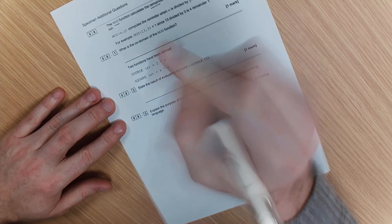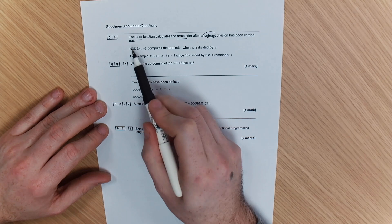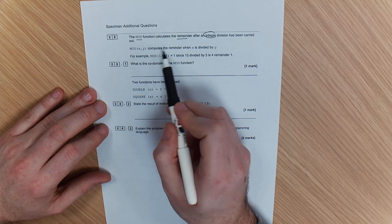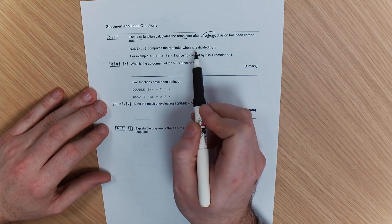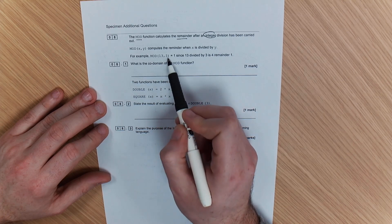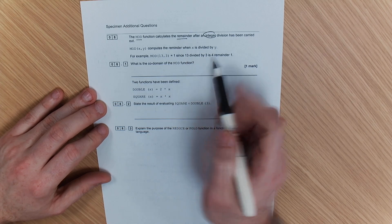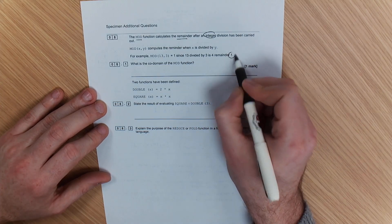That's important. Just make a note of that. So we've got integer division that's been carried out. Mod xy computes the remainder when x is divided by y. For example, mod 13 for 3 equals 1 since 13 divided by 3 is 4 and gives you the remainder of 1.